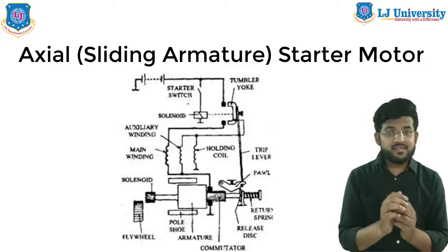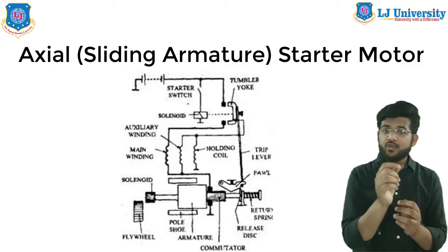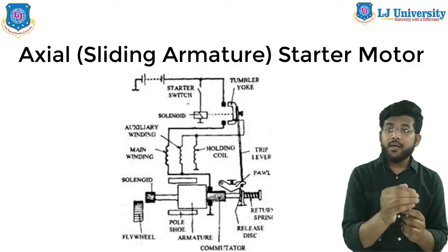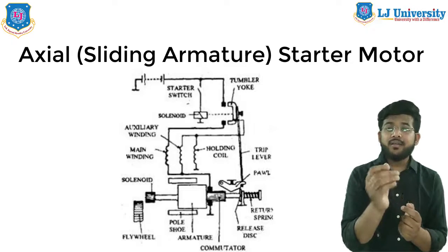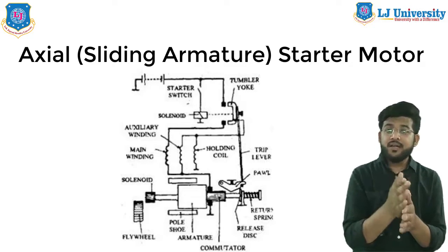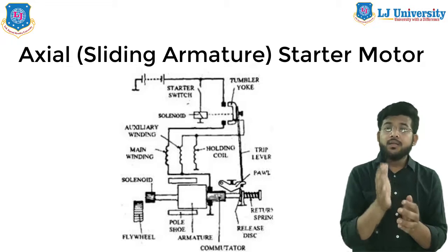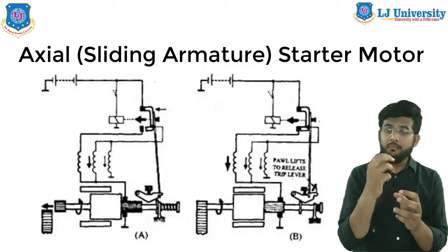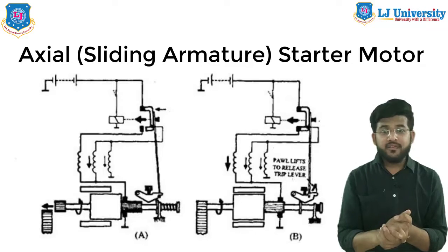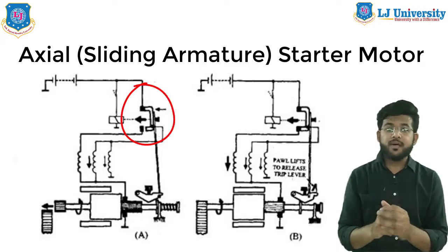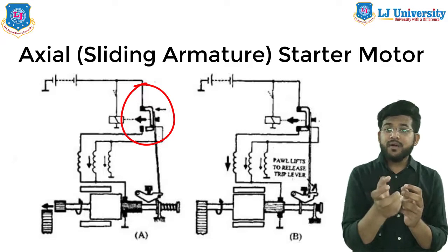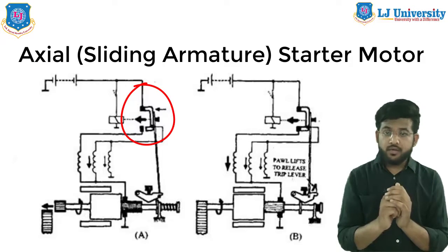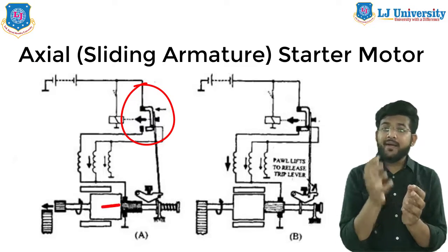A two-stage solid switch mounted on the starter operates the starter and is energized by the driver's starter switch. When the switch is operated, the first pair of contacts closes but the second pair is held open by the pole that engages in a slot in the trip lever. Once the pinion is nearly fully engaged with the ring gear, the pole allows the second pair of contacts to close. The first figure shows the first pair of contacts closed, which energizes the auxiliary winding, holding winding, and armature.